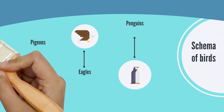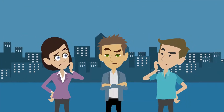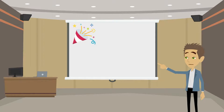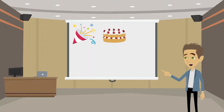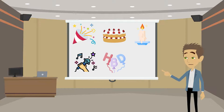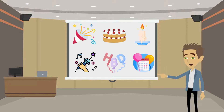Schemas also help you predict what's going to happen next. If you're at a birthday party, you expect that there will be a cake, candles, and someone will sing happy birthday. That's because your birthday party schema tells you what generally happens at such events.